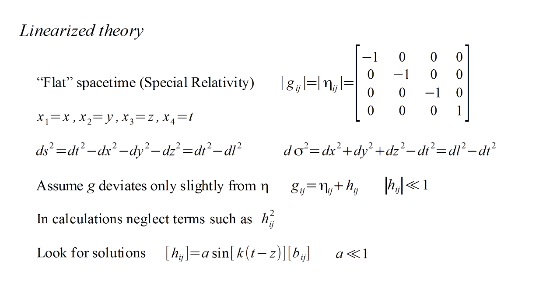We'll now look for solutions where the h components are a small constant a times the sine of k times t minus z, all times an array of constant numbers b-i-j. These constants determine which coordinates are affected by the wave. The sine factor corresponds to a wave traveling at the speed of light along the z-axis with a wavelength determined by the constant k. Let's represent the sine wave amplitude by the vertical position of a ball. You might imagine the ball floating on a body of water. The z-axis points from left to right. As time goes on, the ball, at z equals zero, oscillates. Placing balls at different z values, we see that they all oscillate in the same manner, but with varying time offsets. The result is a wave that travels left to right in the z direction.